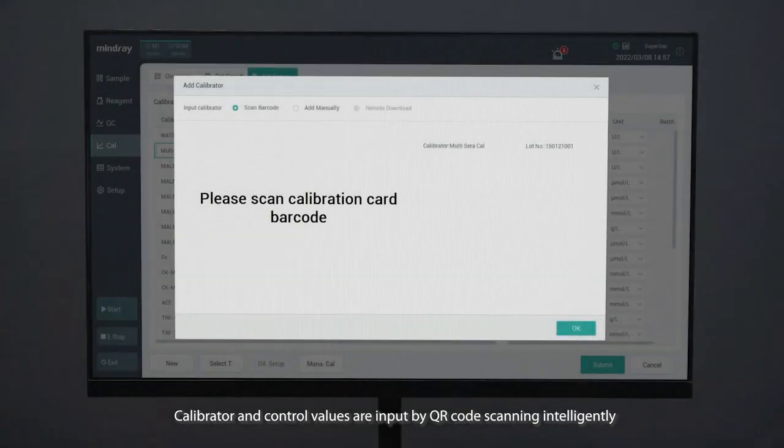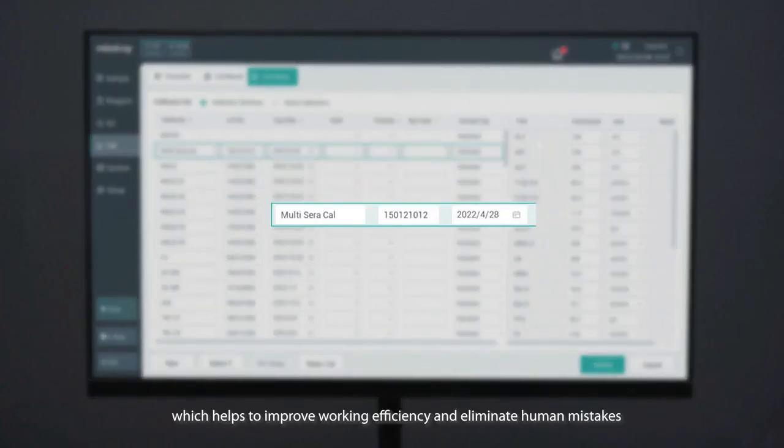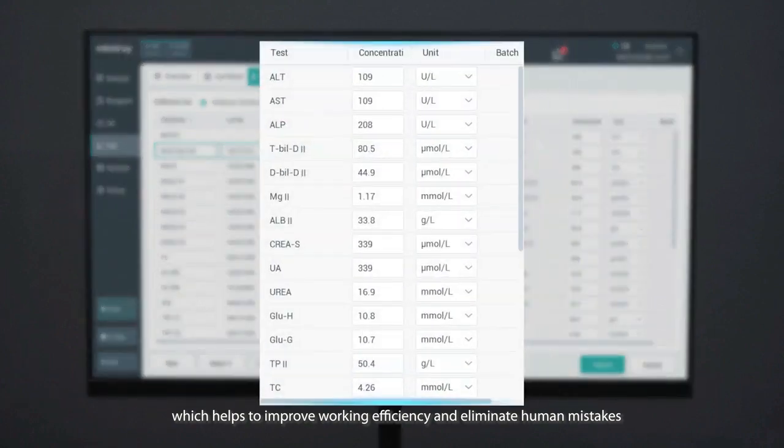Calibrator and control values are input by QR code scanning intelligently, which helps to improve work efficiency and eliminate human mistakes.